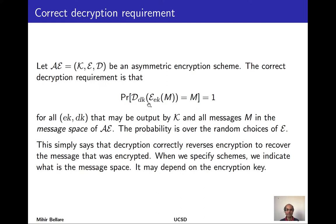There is a probability here because the encryption algorithm may be randomized, so this is an event with some probability — but we ask that probability to be one, meaning it always happens. The message is drawn from a message space associated to the scheme, and when we specify schemes we indicate what that space is. In a few cases this space may even depend on the encryption key.